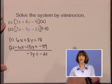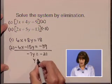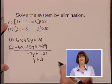As the last step, let's divide both sides by negative 7 to get y equals 3.